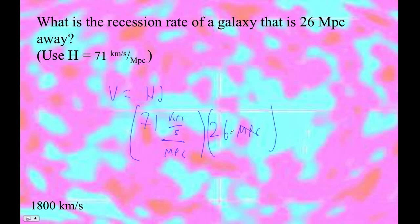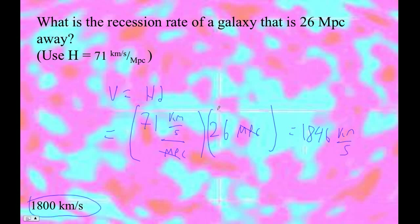So the megaparsecs cancel out. 71 times 26 is 1,846 kilometers per second — which, sadly, we'd have to round to that. Yay.